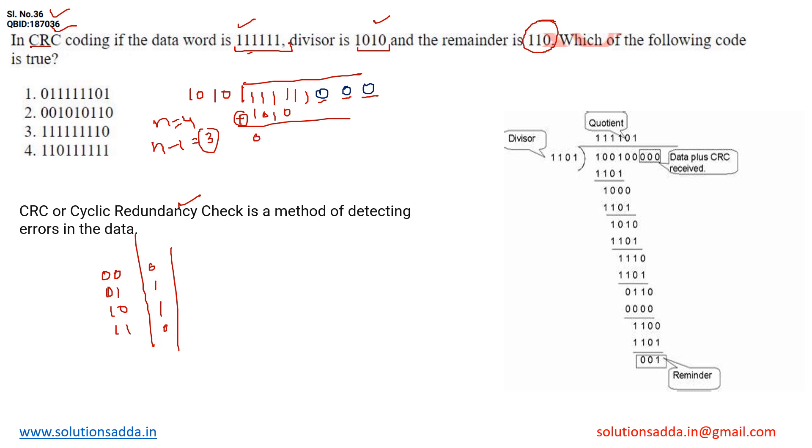So on 1, 1, we will get 0. On 1, 0, we will get 1. On 1, 1, we will get 0. On 1, 0, we will get 1. Now take the 1 from the word. Now again apply the divide operation. Again, I am getting 1, 0, 1, 0 and apply the XOR operation.